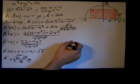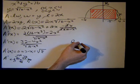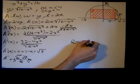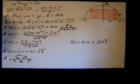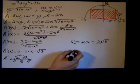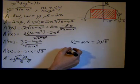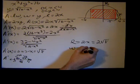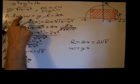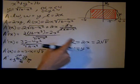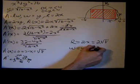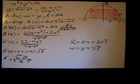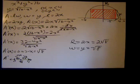Now we go back and get our length and width. The length equals 2x, so it equals 2 times the square root of 8. The width equals y, and y equals the square root of 16 minus x squared. With x equal to the square root of 8, x squared is 8, and 16 minus 8 is 8, so the width equals the square root of 8. The length and width that maximize the area of the rectangle inscribed in the semicircle of radius 4 are: length equals 2 times the square root of 8, and width equals the square root of 8.